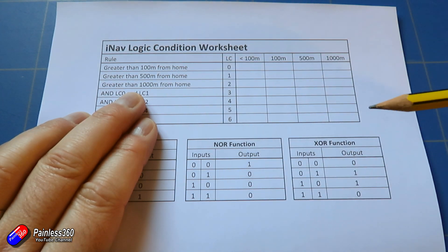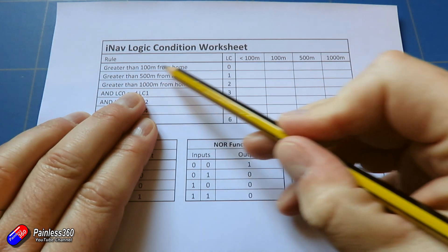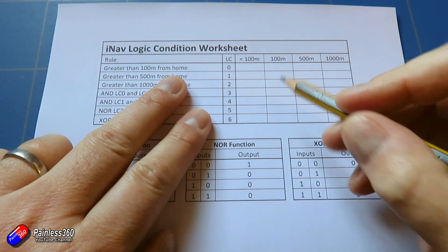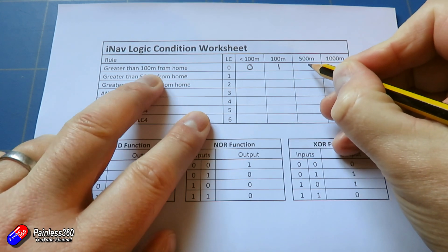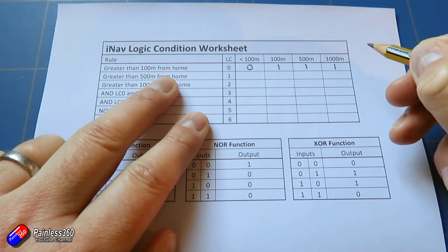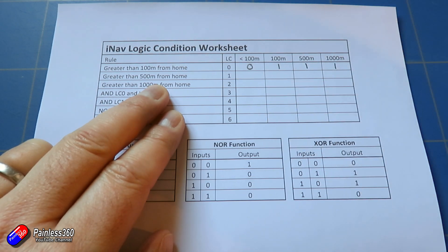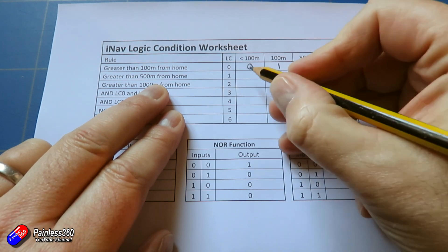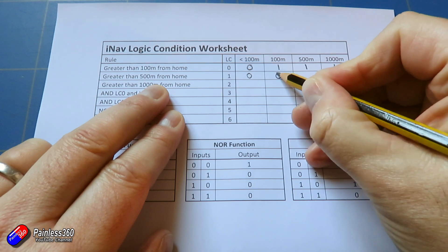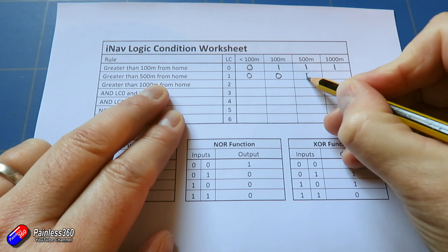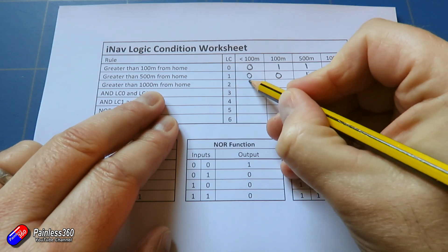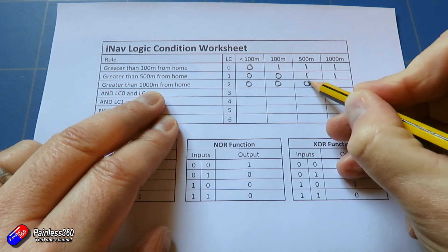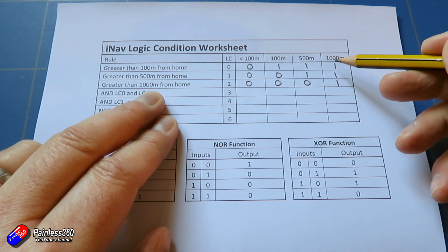The first three logic conditions are testing whether we're 100, 500, or 1000 meters away from home. If a logic condition is active or true I'll put a one; if not active, a zero. Logic condition zero tests: are we 100 meters away from home? Less than 100 meters - false. Over 100 meters - true, and it stays true at 500 or 1000 meters. Logic condition one tests for 500 meters or more. Logic condition two tests for greater than 1000 meters, only becoming active when we're over that threshold.